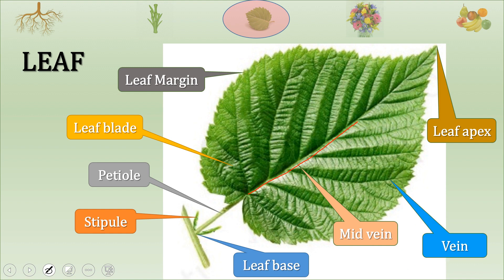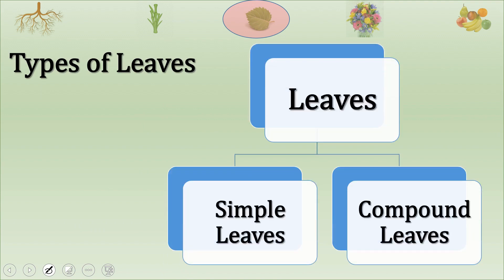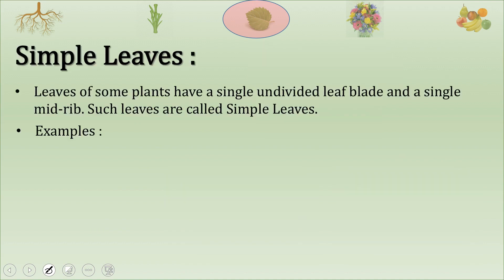Next is vein. Vein provides support for the leaf. Now let us see the types of leaves. Leaves are of two types: simple leaves and compound leaves. Leaves of some plants have a single undivided leaf blade and a single midvein.